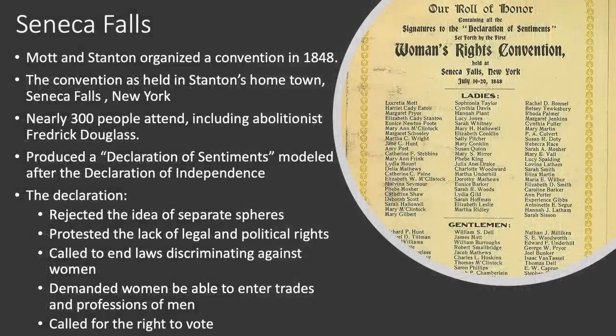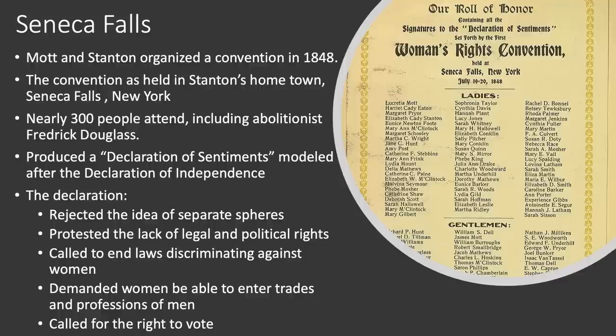Women began to draw parallels between their lack of rights and the lack of rights slaves had. Mott and Stanton organized the first women's rights convention in the United States in 1848, held in Stanton's hometown of Seneca Falls, New York, with nearly 300 people attending including abolitionist Frederick Douglass. The convention produced a Declaration of Sentiments and Resolutions, modeled after the Declaration of Independence but revised to state that all men and women were created equal. It rejected separate spheres, protested the lack of legal and political rights, called for an end to discriminatory laws, demanded women be able to enter trades and professions they had been barred from, and called for the right to vote. While this convention is often identified as the start of the women's movement, women had been advocating for their rights well before Seneca Falls.